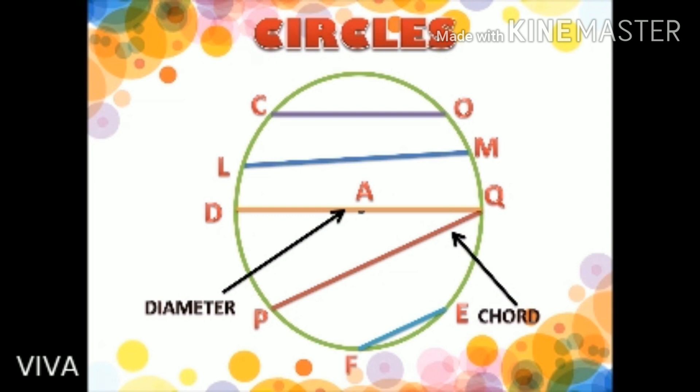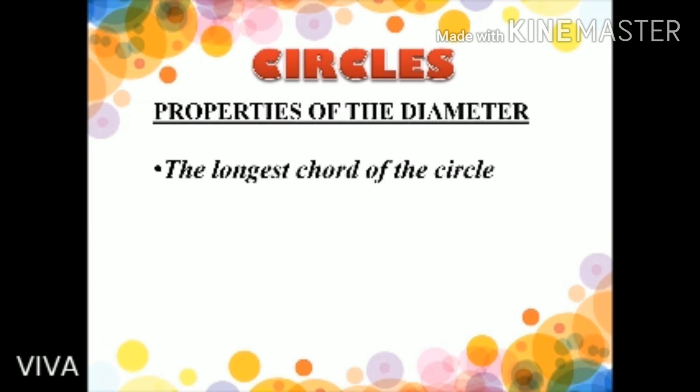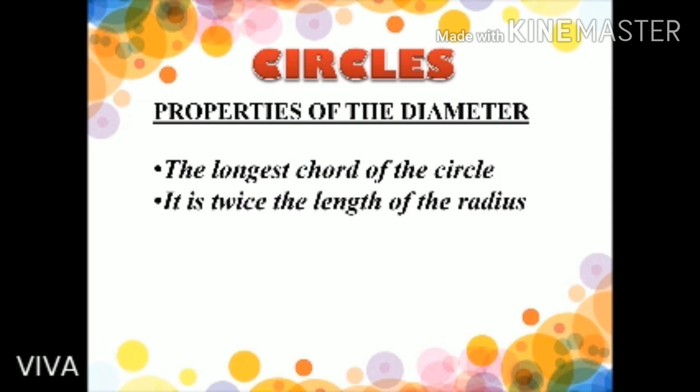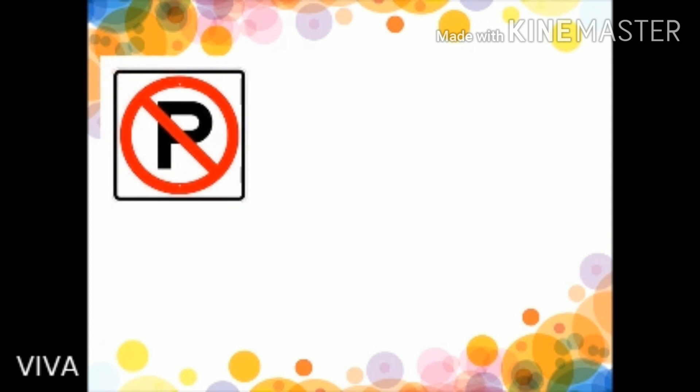Some of the properties of diameter are: it is the longest chord of the circle; it is twice the length of the radius; and all diameters of a circle are equal in length. In our everyday life, we use chords in many ways, like in some of the sign boards as can be seen here.